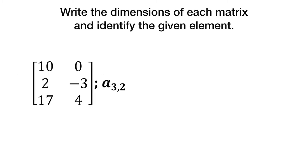We have one more that we're going to try. In this case, this would be a 3 row by 2 column matrix. So a 3 by 2, and a 3,2 would be row 3, column 2, or 4.